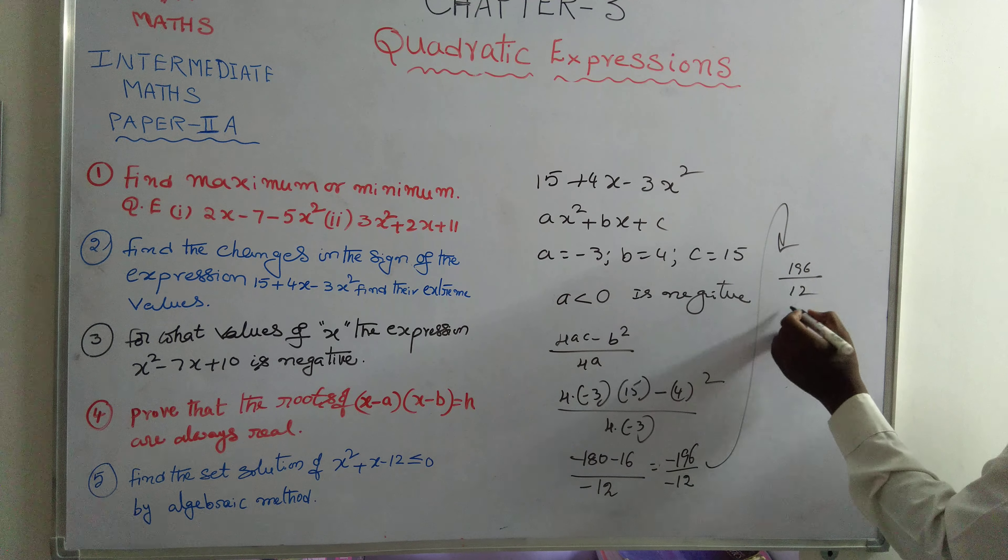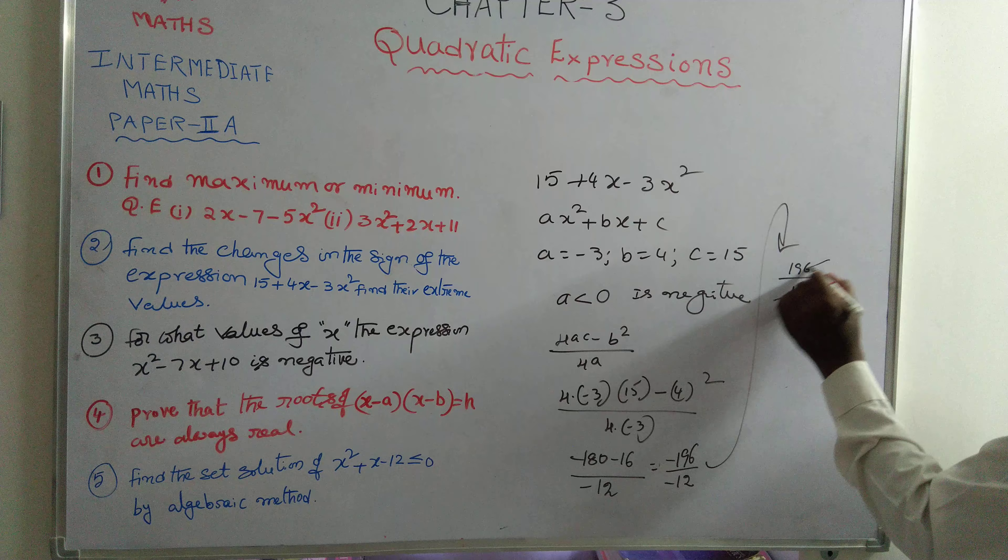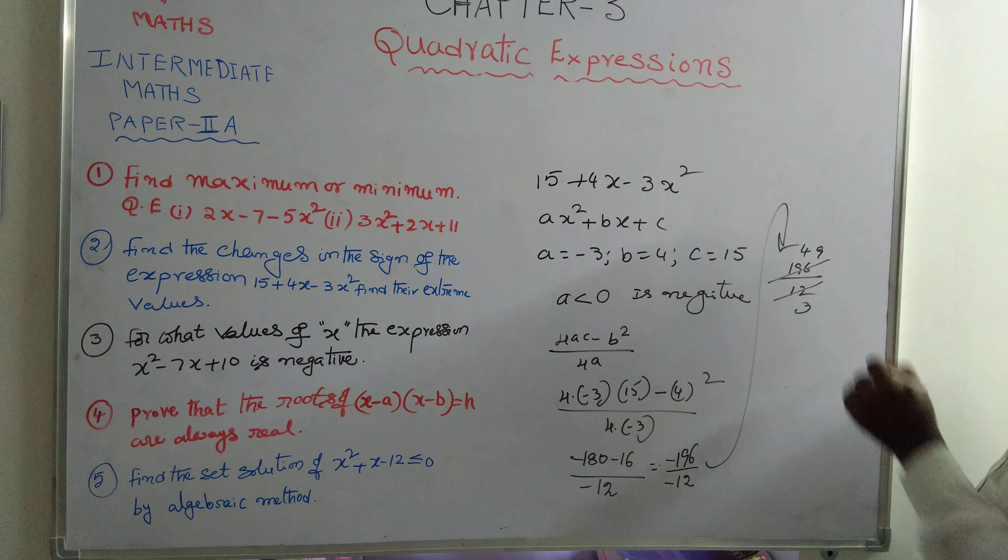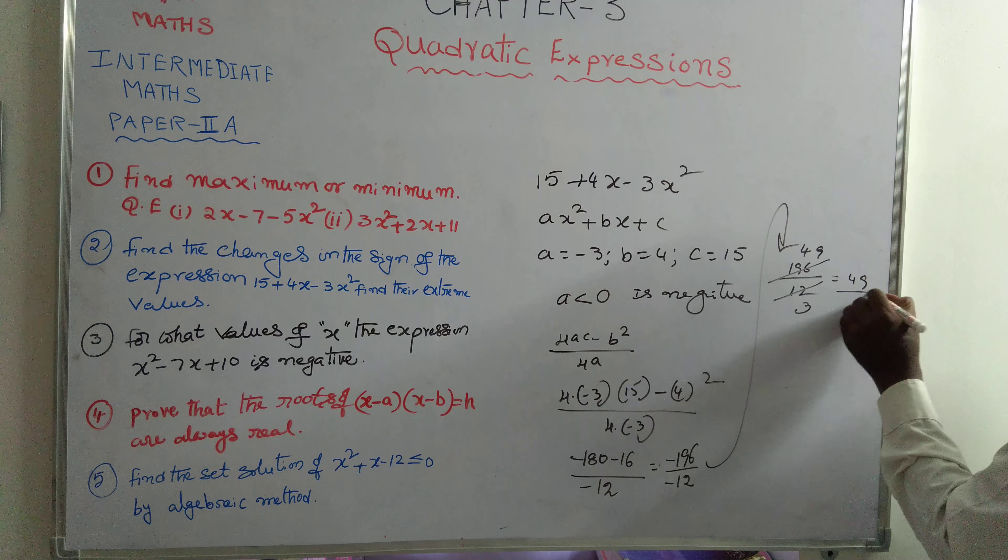Here 4 will be cancelled 3 times. Here 4, 4s are 60, 9, 4s are 36. That is equal to 49 by 3.